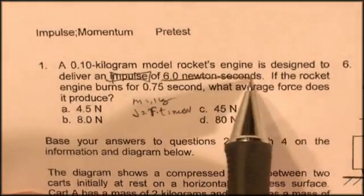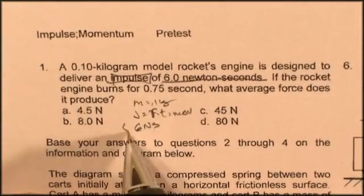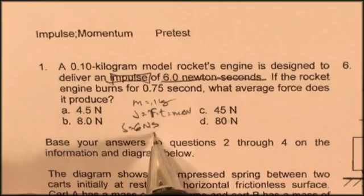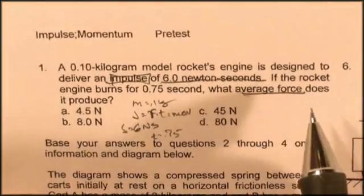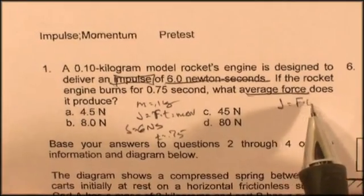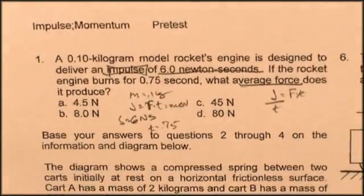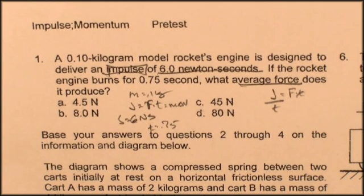So the impulse is 6 newton-seconds, and the rocket burns for 0.75 seconds, so the time is 0.75. They're asking for average force, so if impulse is force times time, then impulse divided by time would give you force, and that would solve that particular problem. 6 divided by 0.75, and so I could guess the answer, you can figure it out.